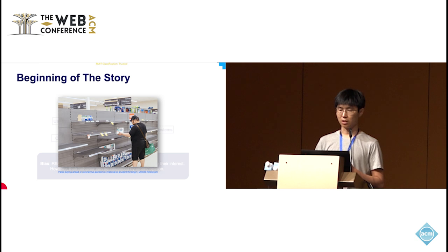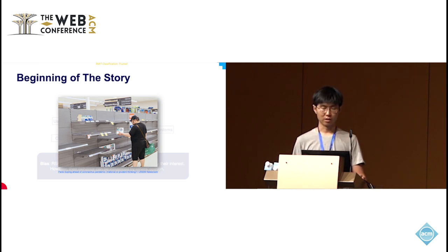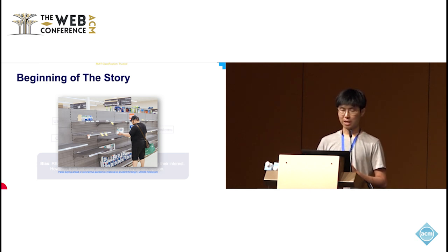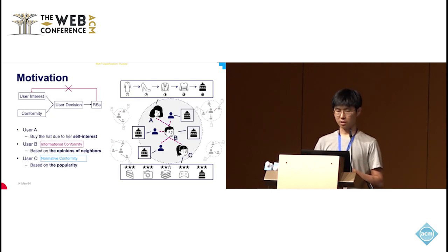Because users' decisions can be influenced by others' opinions, they adjust their behavior to match those of other people or group standards. We call it conformity behavior. This bias can influence recommender systems' performance. For example, during the pandemic, we all know about the panic-buying phenomenon. This is a typical example showing people conforming to the group and running into the shopping mall to buy a lot of products they don't necessarily need, like toilet paper. This behavior is not driven by their interest, but by conformity to others' opinions. To make this more concrete, I use this example to explain.